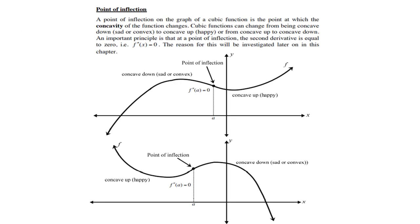Point of inflection. A point of inflection on the graph of a cubic function is the point at which the concavity of the function changes. Cubic functions can change from being concave down — called sad or convex — to concave up, called happy, or from concave up to concave down. An important principle is that at a point of inflection, the second derivative f''(x) is equal to zero. The reason for this will be investigated later in this chapter.